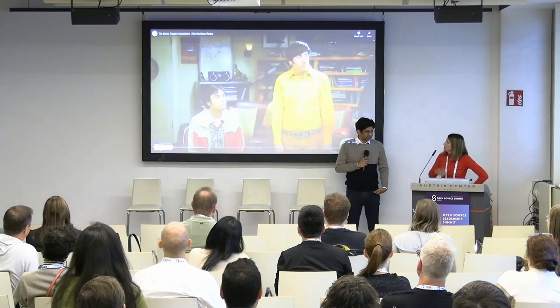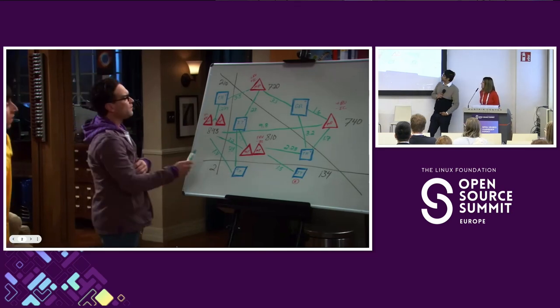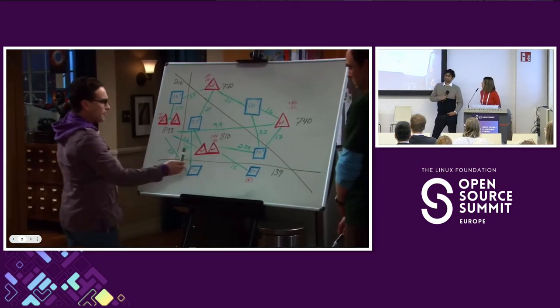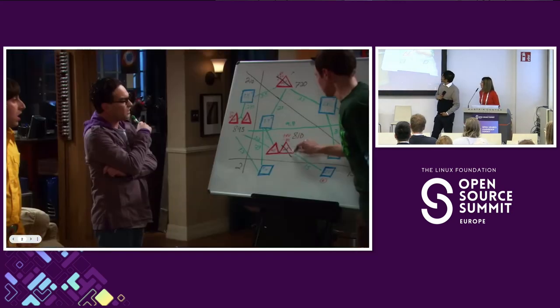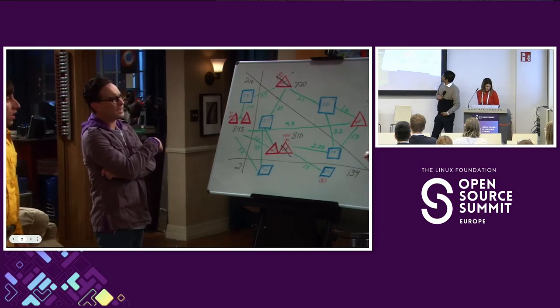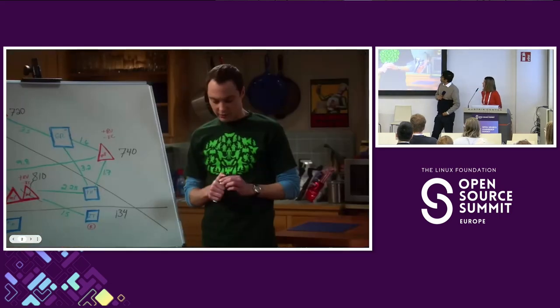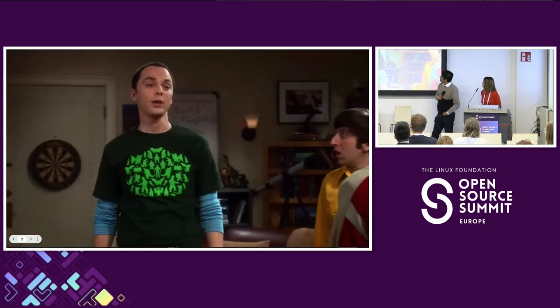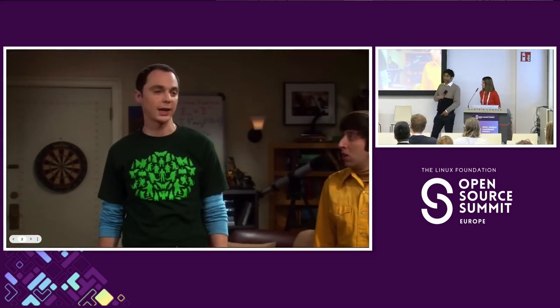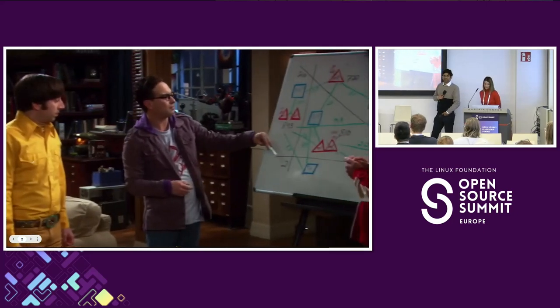The problem appears to be unsolvable. Maybe we could run some computer simulations. There are too many variables, it would take forever. We've got to be missing something. Let's start again. The movie is playing here at 7:20, here at 7:40, here at 8:10, and here at 8:45. These theaters have to be eliminated. Why? They're state-of-the-art — digital projection, 20-channel surround sound. Yes, but they have no icy machines, despite my aggressive letter-writing campaign.